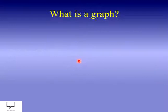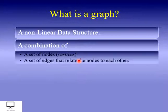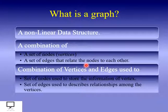First of all, let's see what is a graph. A graph is a non-linear data structure. Basically, it is a combination of nodes and edges. Nodes are also called vertices, and edges are the connections between the vertices which are used to relate the nodes. Combinations of vertices and edges are used to store information and describe the relationships among the vertices.